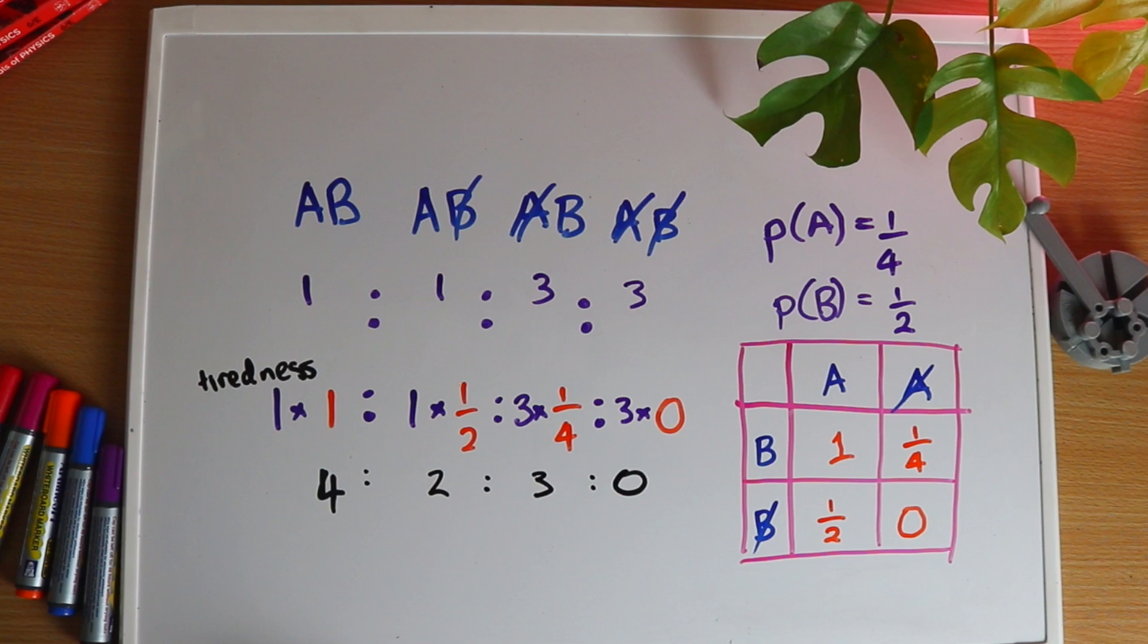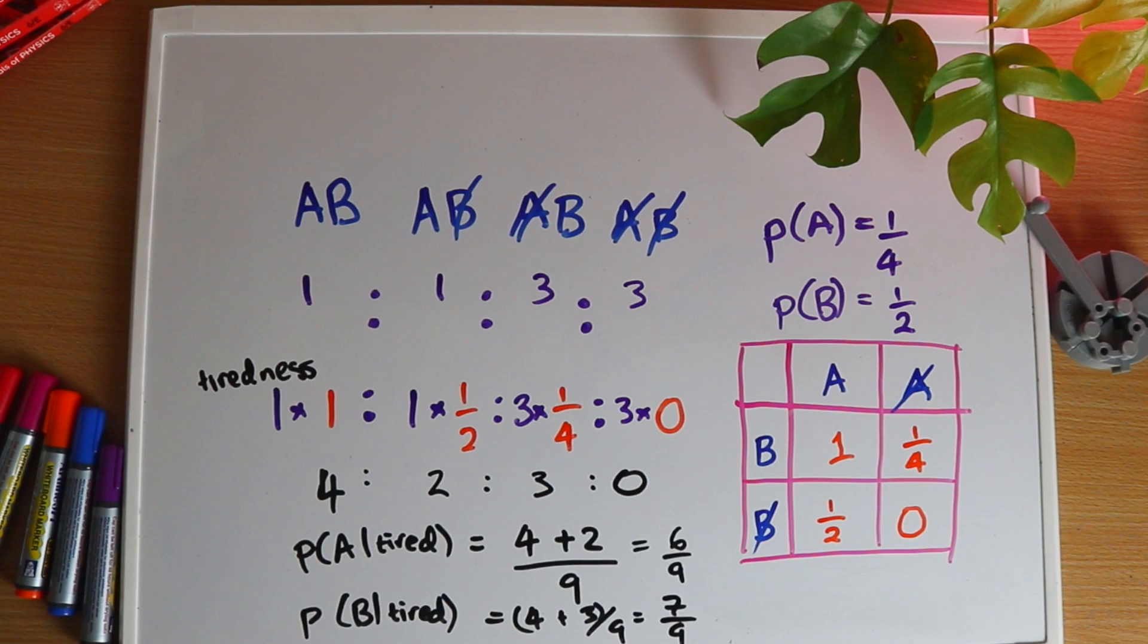So what does this say? It says if we only look at people who are tired. For every four of them that have both A and B, two have just A and three have just B. In the end then, if someone tells you that they're tired, you can conclude that they're a little bit more likely to have B than A overall, but the most likely thing is that they have both.